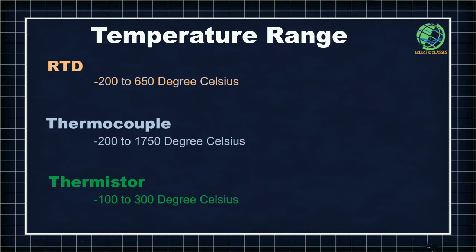In terms of temperature range, thermocouples have the widest temperature measurement range, from minus 200 to 1750 degrees Celsius. RTDs are capable of measuring temperature from minus 200 to 650 degrees Celsius. Thermistors can measure temperature from minus 100 to 300 degrees Celsius.